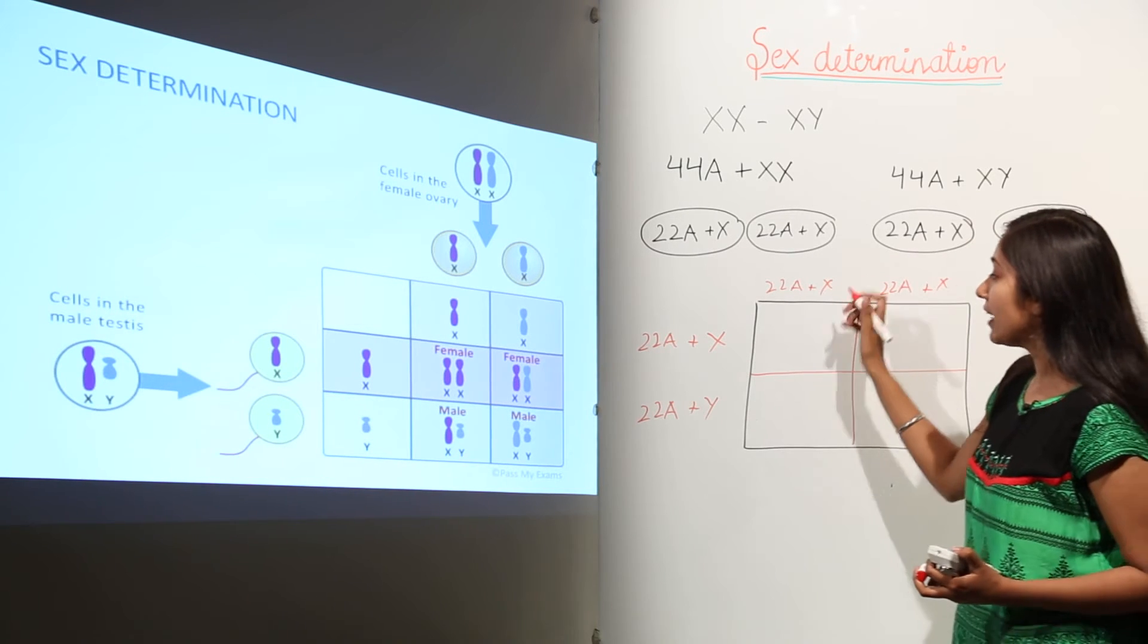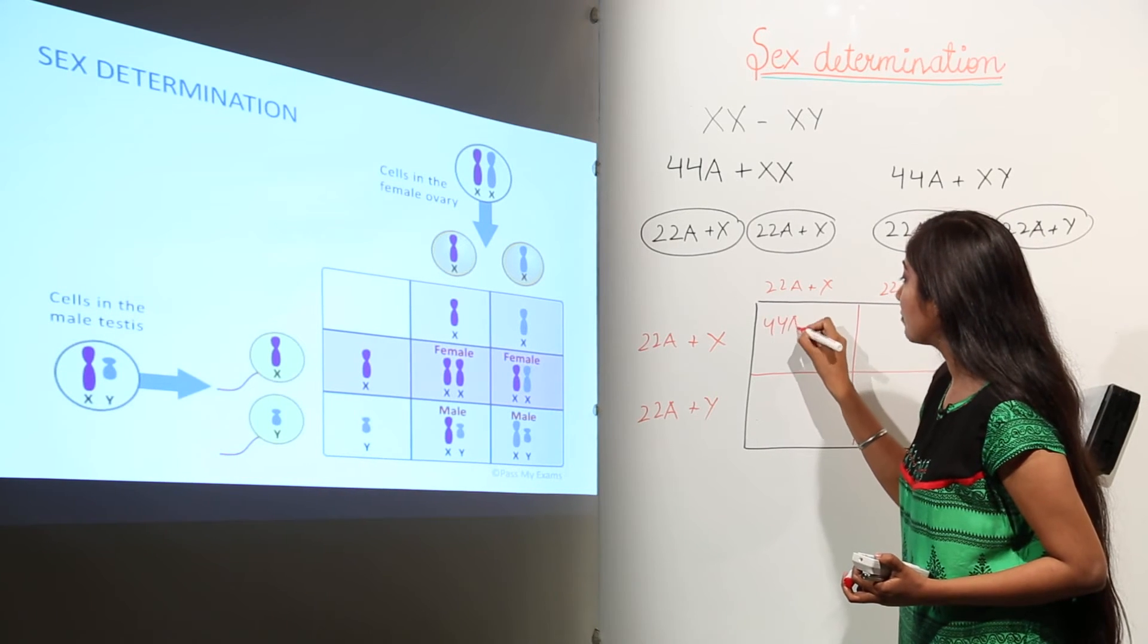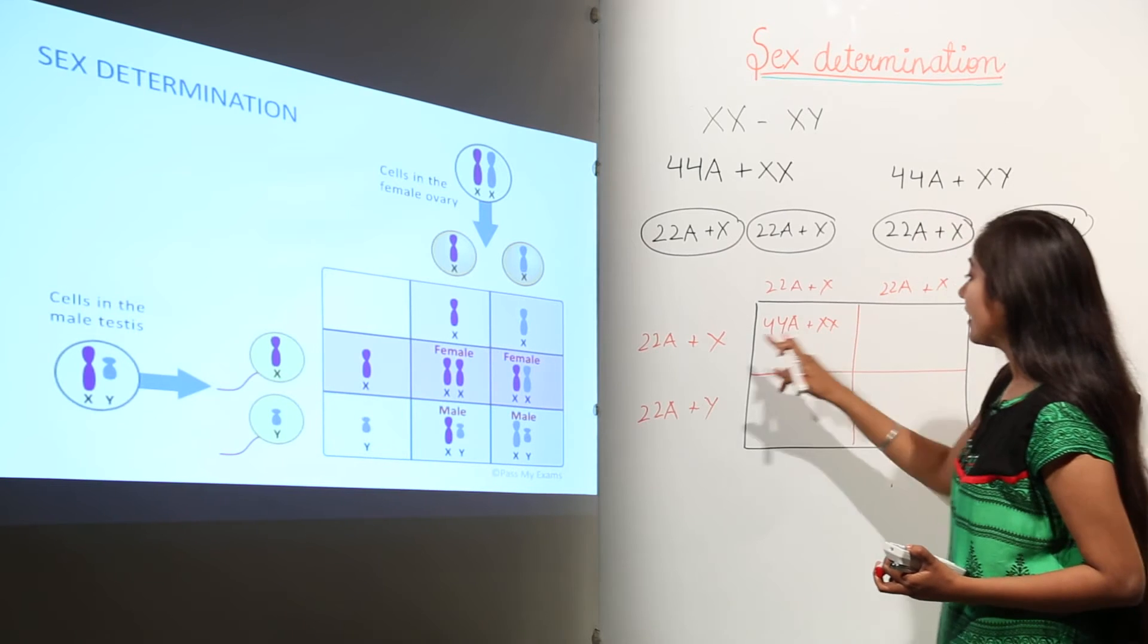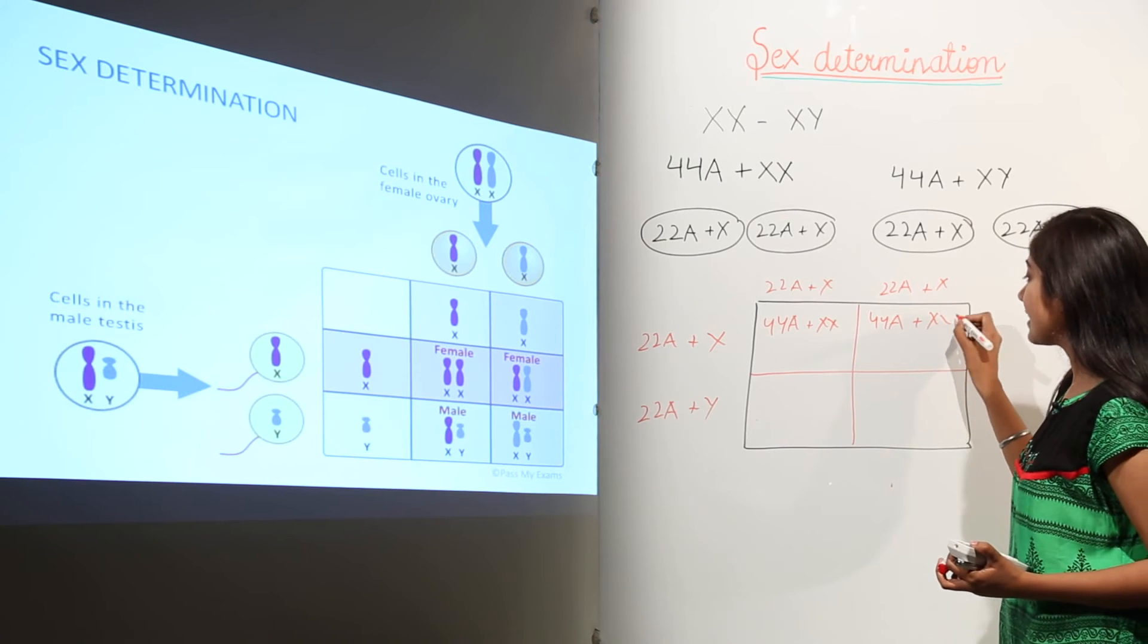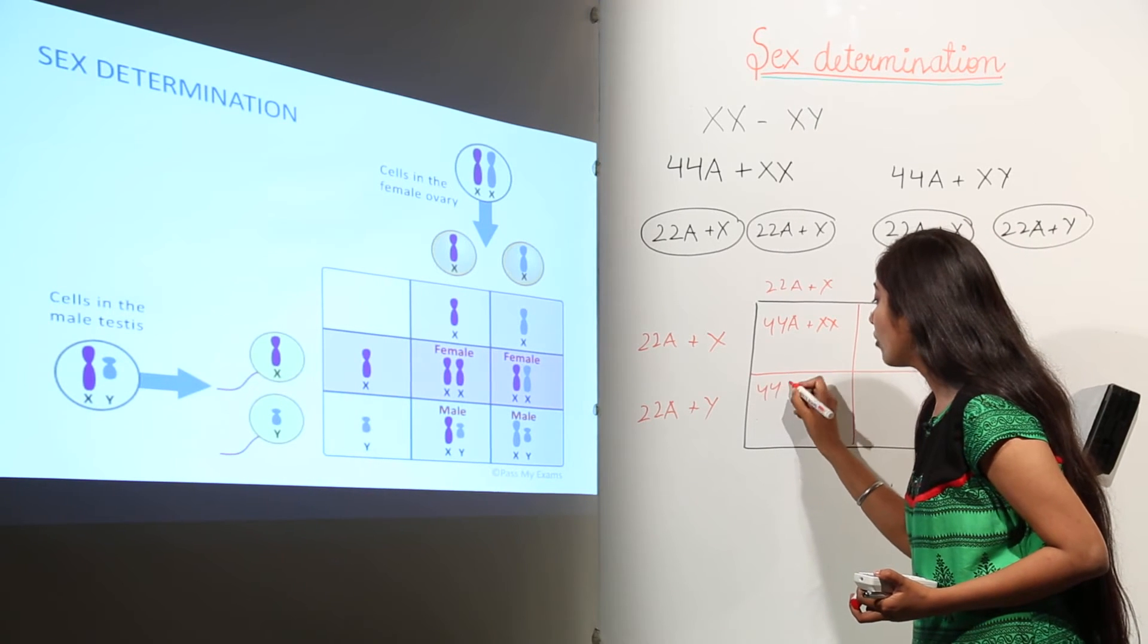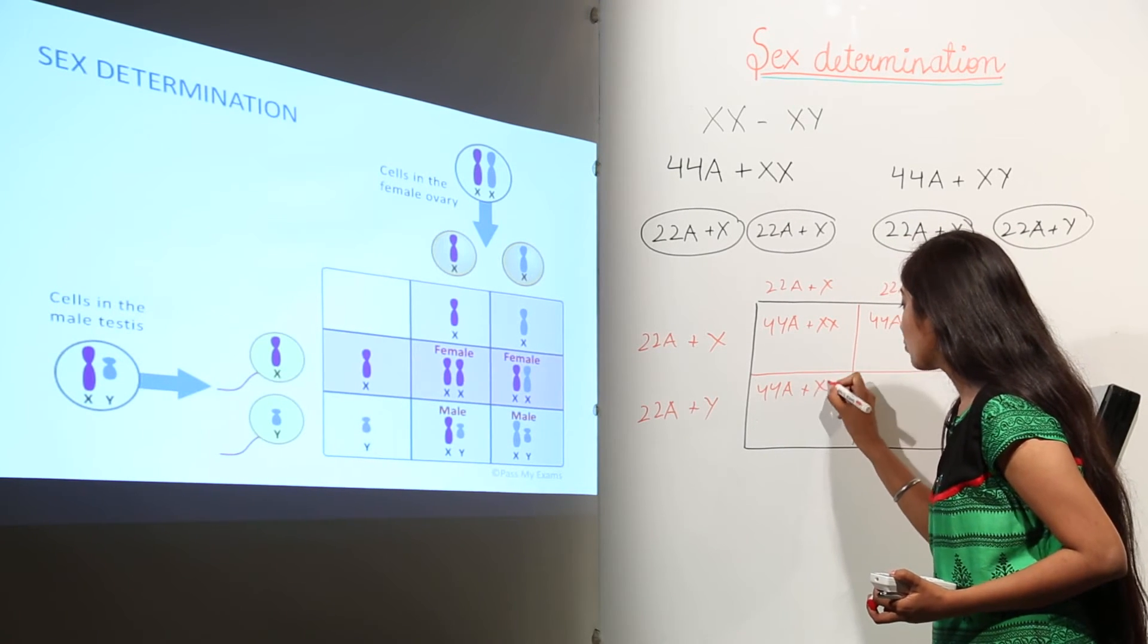So when we are going to combine, we will have 44A plus XX, and here we will have 22 plus 22, that is 44A plus XX. And here we will have 44A plus XY.